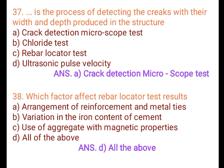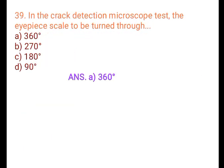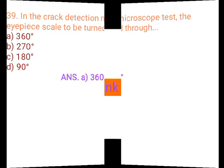Question 38: Which factors affect rebar locator test results? A. Arrangement of reinforcement metal tiles, B. Variation in the iron content of cement, C. Use of aggregate with magnetic properties, D. All of the above. Answer: D. All of the above. Question 39: In the crack detection microscope test, the IP scale is turned through: A. 360 degrees, B. 270 degrees, C. 180 degrees, D. 90 degrees. Answer: A. 360 degrees.